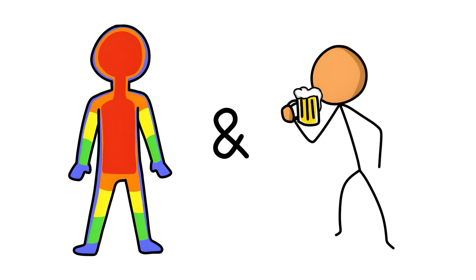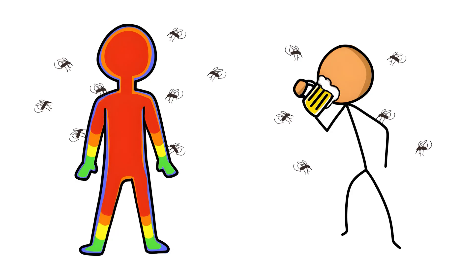Also, our body heat plays a role, as does whether or not we have drunk alcohol. The warmer we are, the more interested the mosquito is in settling on us. Experiments have also shown that our skin is more attractive to mosquitoes if we have consumed alcohol beforehand.